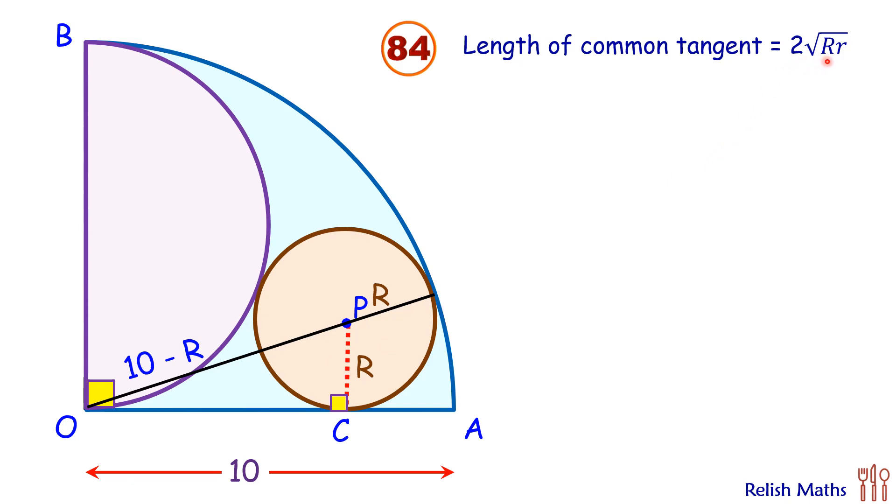Here, capital R is for the circle, small r is for this purple semicircle. Now for this diameter, OB is 10 centimeters, 5 centimeters, and thus the radius will be 5 centimeters. Putting this r as 5, we will get the length OC as 2 times root 5R.